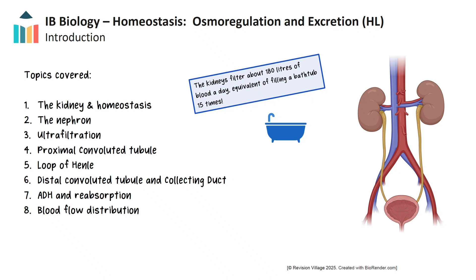In this video, we'll cover the key steps and structures involved in how the kidney maintains homeostasis. We'll start with an overview of the kidney's role, then explore the nephron, the structural and functional unit responsible for filtration and reabsorption. Along the way, you'll see just how efficient the kidneys are. Humans have two kidneys and filter around 180 litres of blood each day, which is roughly the equivalent of filling a bathtub 15 times. Yet nearly all of that fluid is carefully reabsorbed and balanced.